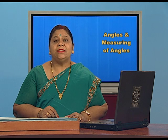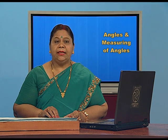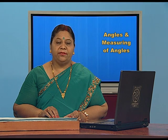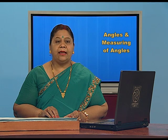What is an angle? An angle is a measure of rotation of a given ray about its initial point. The original ray is called the initial side, and the final position of the ray after rotation is called the terminal side of an angle. The point of rotation is called the vertex. If the direction of rotation is anticlockwise, the angle is said to be positive, and if the direction is clockwise, then the angle is negative.